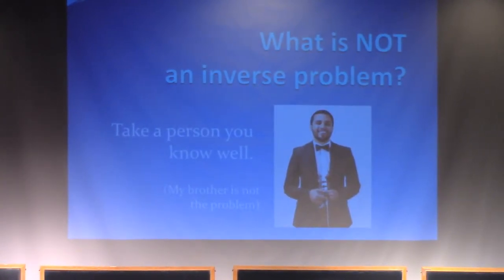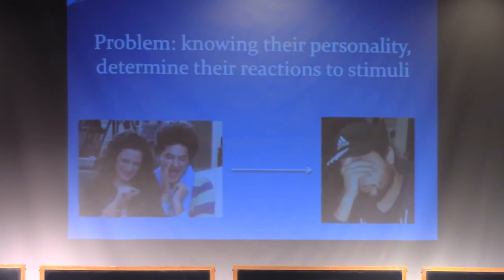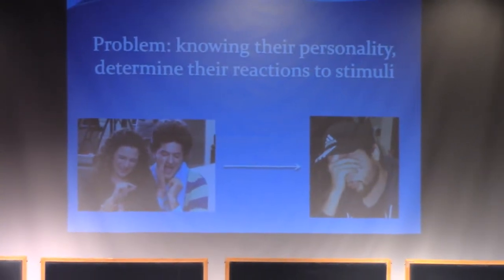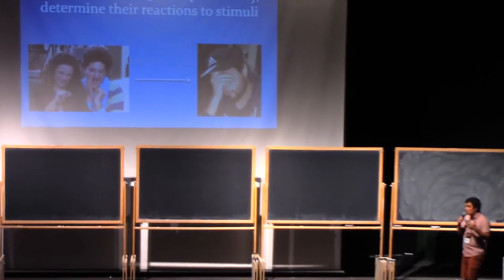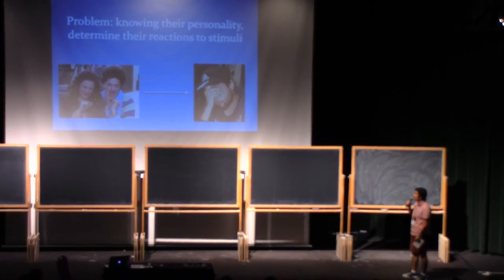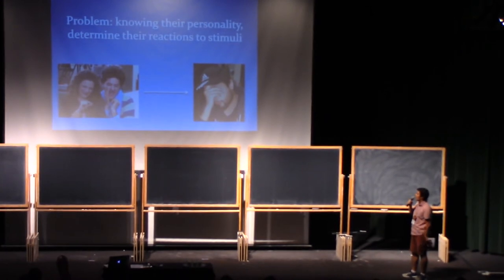So let me introduce first what is not an inverse problem. Take someone you like. That's my brother. He's not the problem. And since you are supposed to know him well, then you should be familiar with his personality. The problem would be, given that personality, to determine the reactions to stimuli. So he would be annoyed to that pair of brothers there from Parks and Recreation.